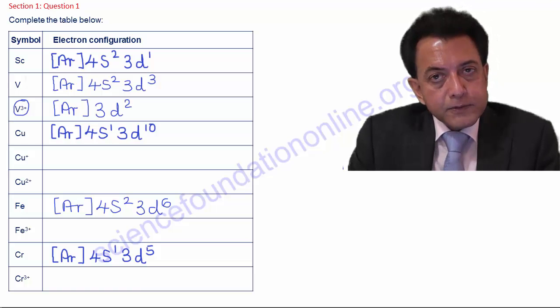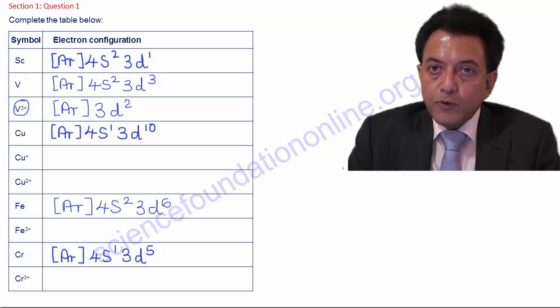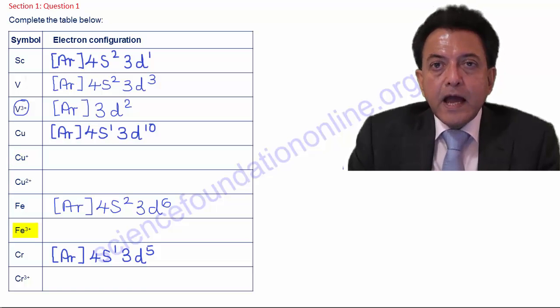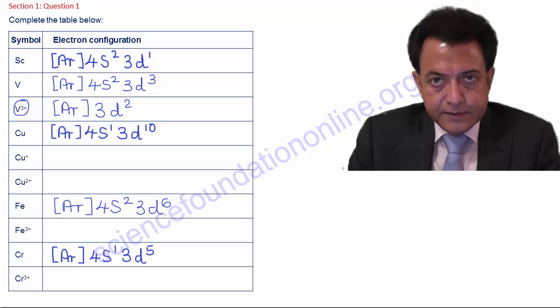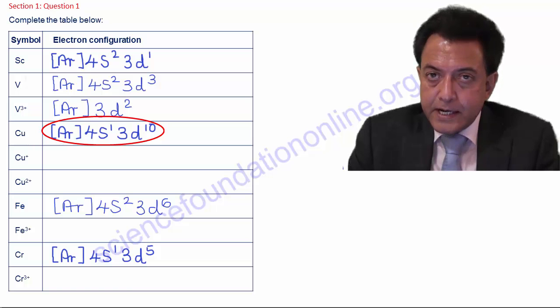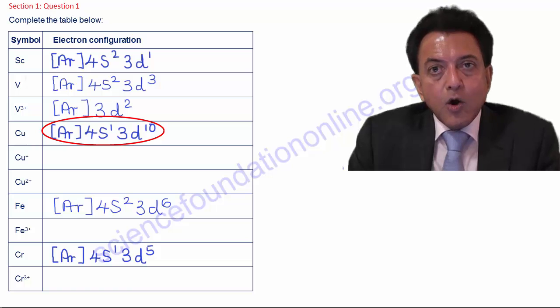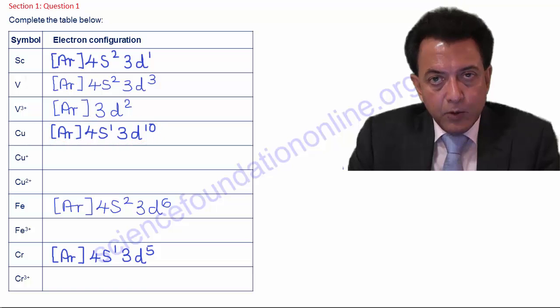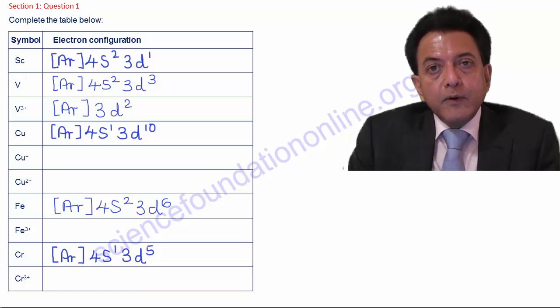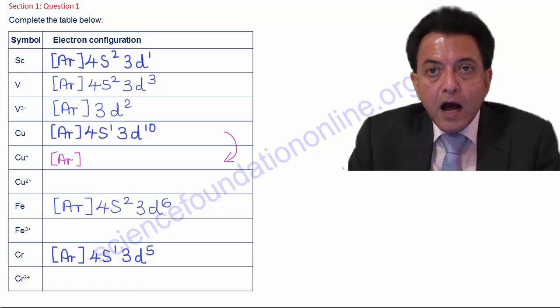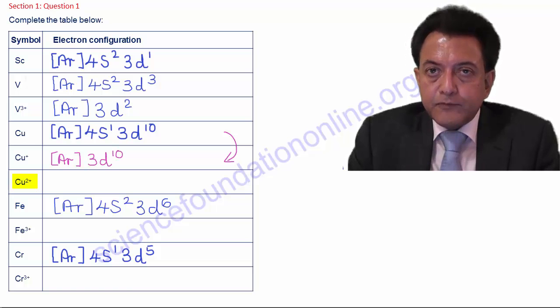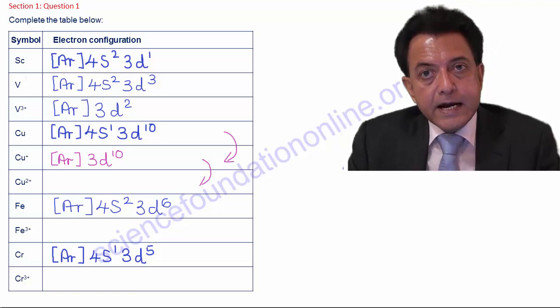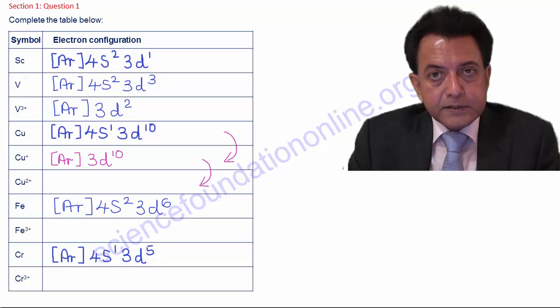Again, you can pause my explanation while attempting to complete the electron configurations of copper 1 plus, copper 2 plus, Fe3 plus and chromium 3 plus before comparing them with my answers. Beginning with the electron configuration of copper as [Ar] 4s1 3d10, it is the 4s electron that gets removed when forming a Cu1 plus ion. So, its electron configuration, we just take away that one 4s1 electron from the original copper electron configuration and this gives Cu1 plus as being [Ar] 3d10. In the case of copper 2 plus, the next electron to be removed comes from the 10 d electrons. So, that gives Cu2 plus the electron configuration of [Ar] 3d9.